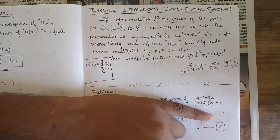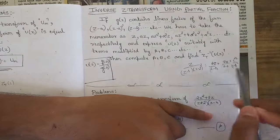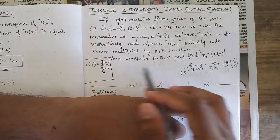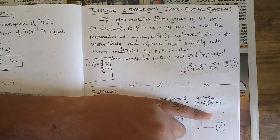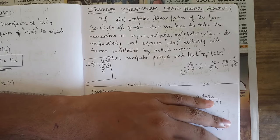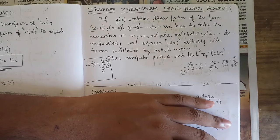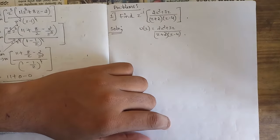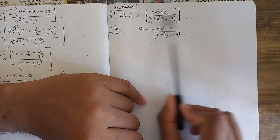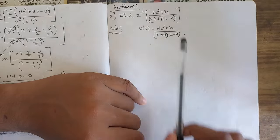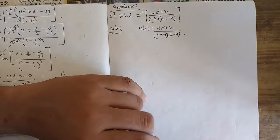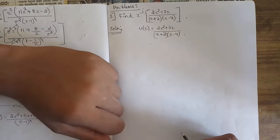After writing the partial fraction form, we compute the values for A, B, and C respectively — as we studied previously. After finding A, B, and C, we compute the Z-inverse of U(z). Now we'll solve a few problems related to partial fractions to make the concept clear.